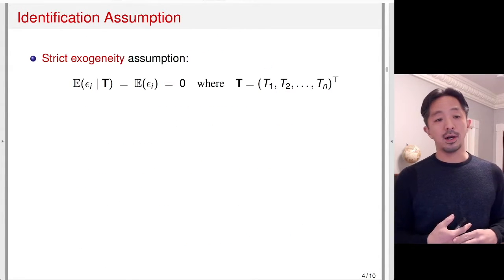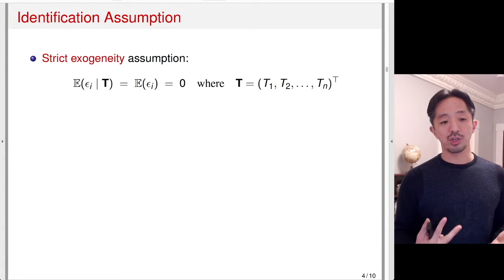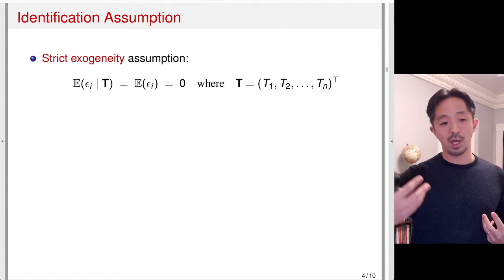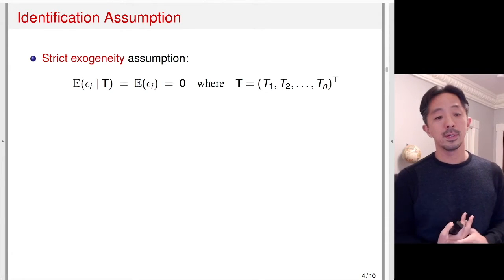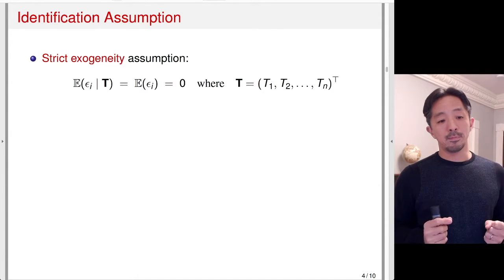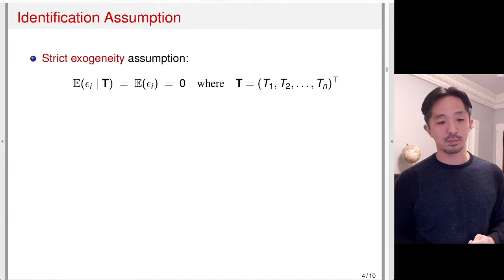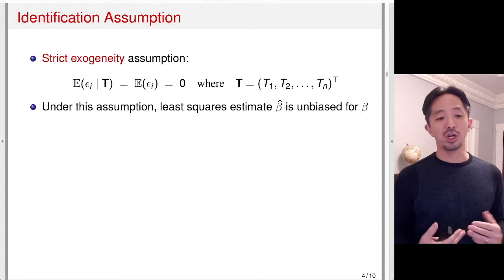How do we identify the parameters alpha and beta? In a standard linear regression textbook, you learn the strict exogeneity assumption, where the error term epsilon i is independent of the predictor t, the treatment. Here I'm writing this in general notation where big T is a vector of treatment statuses. Since epsilon i is mean-independent of the treatment, you can drop T, and it equals the marginal mean of epsilon, which is zero by assumption. That's the usual strict exogeneity assumption we learn in linear regression.